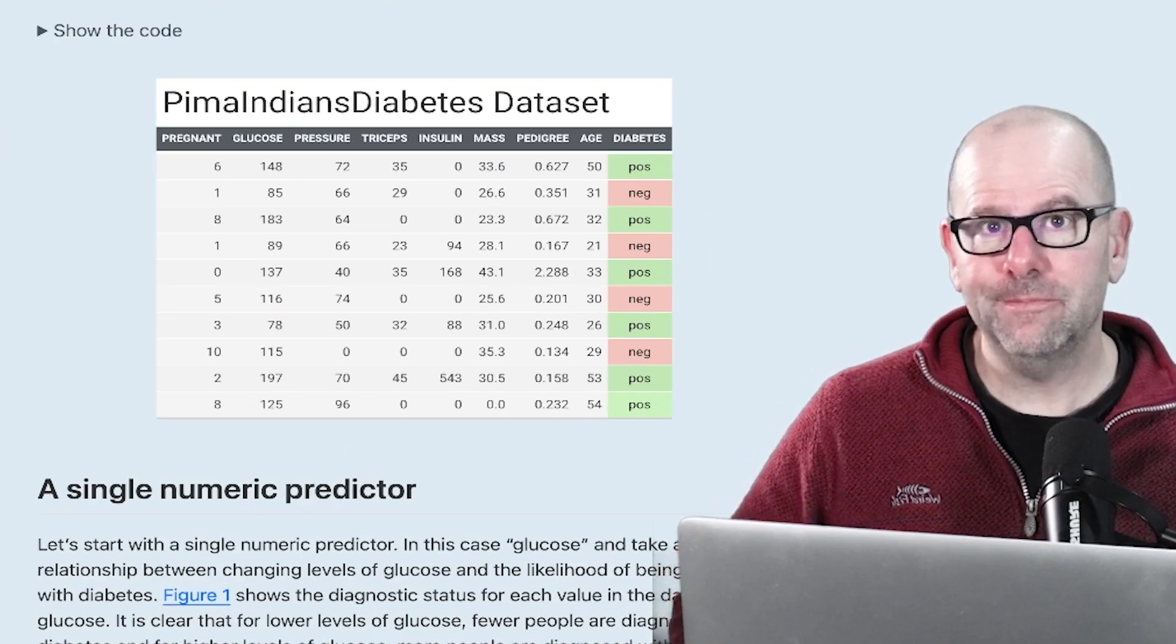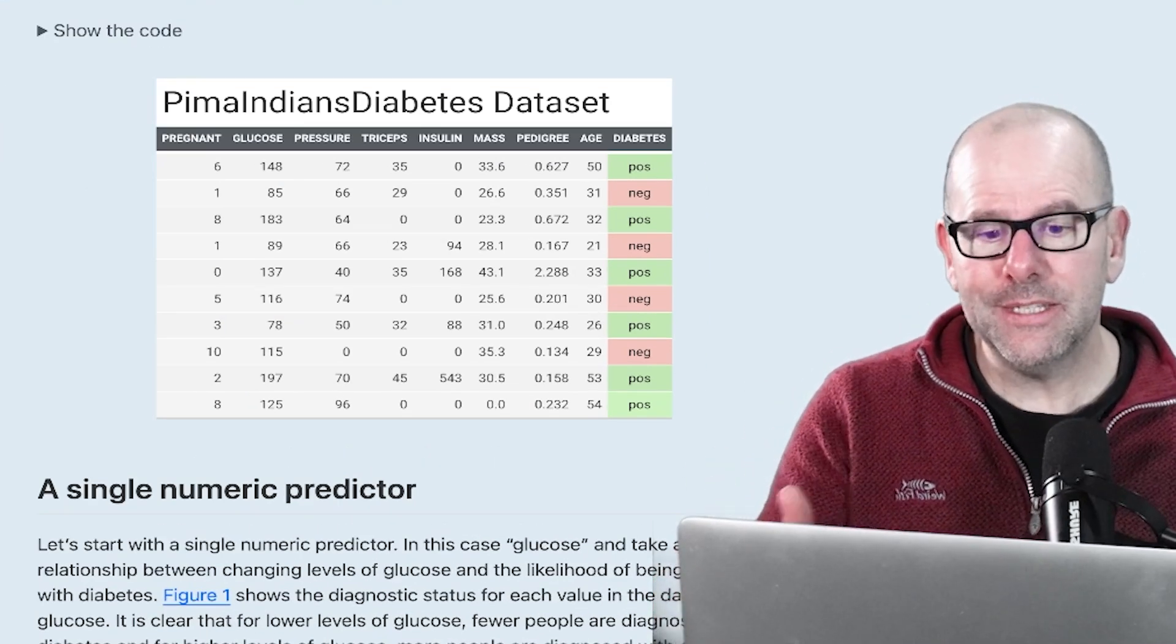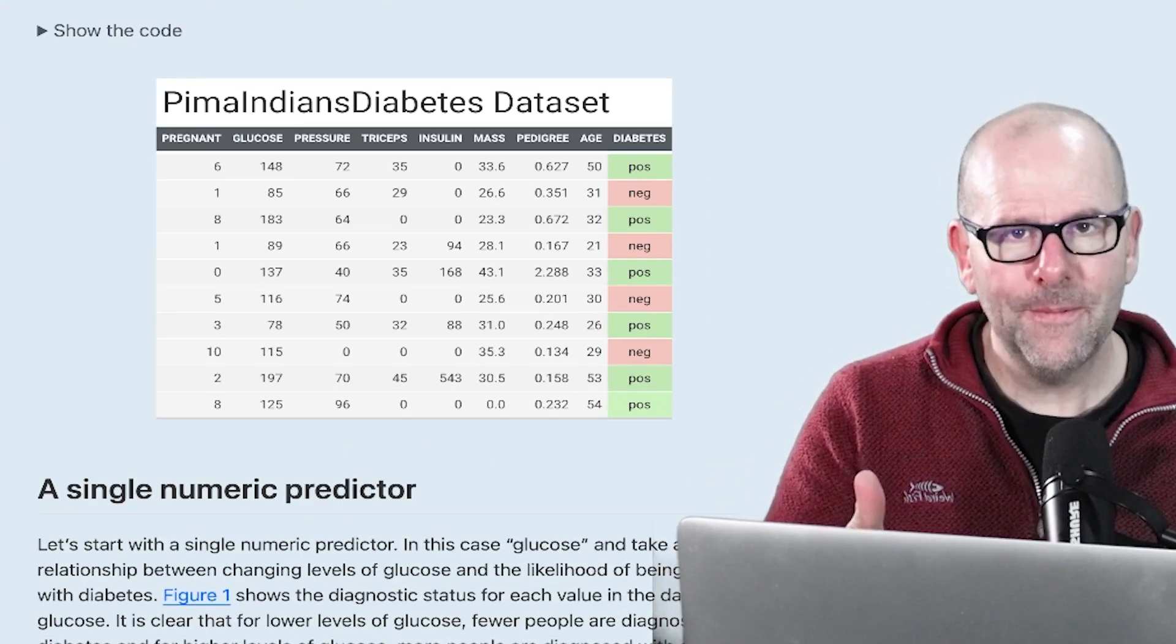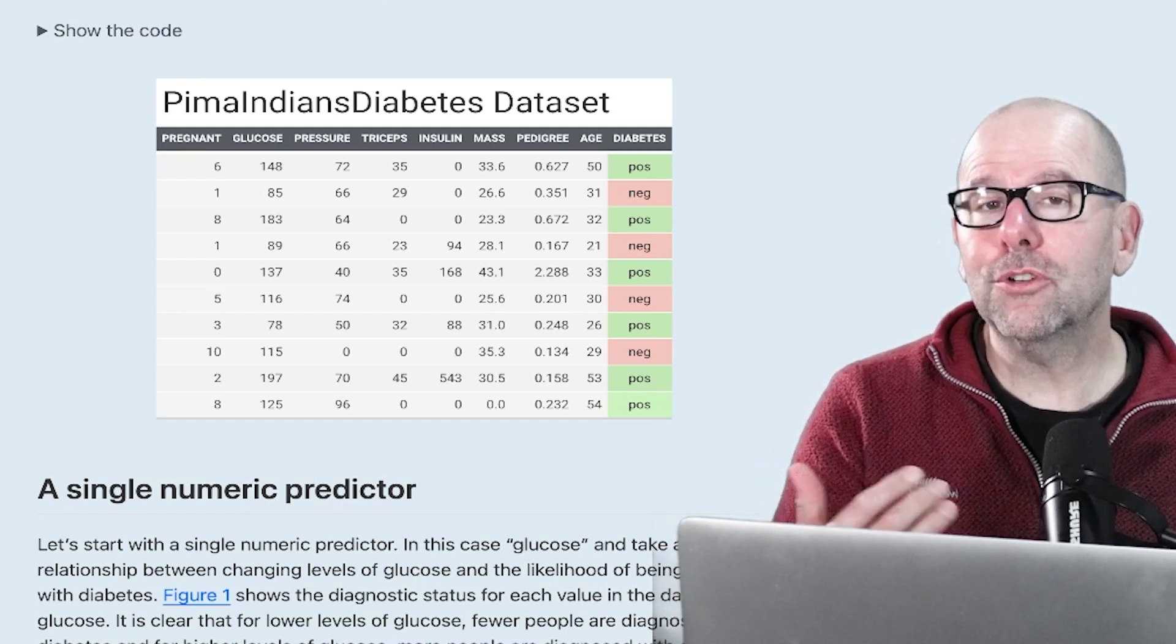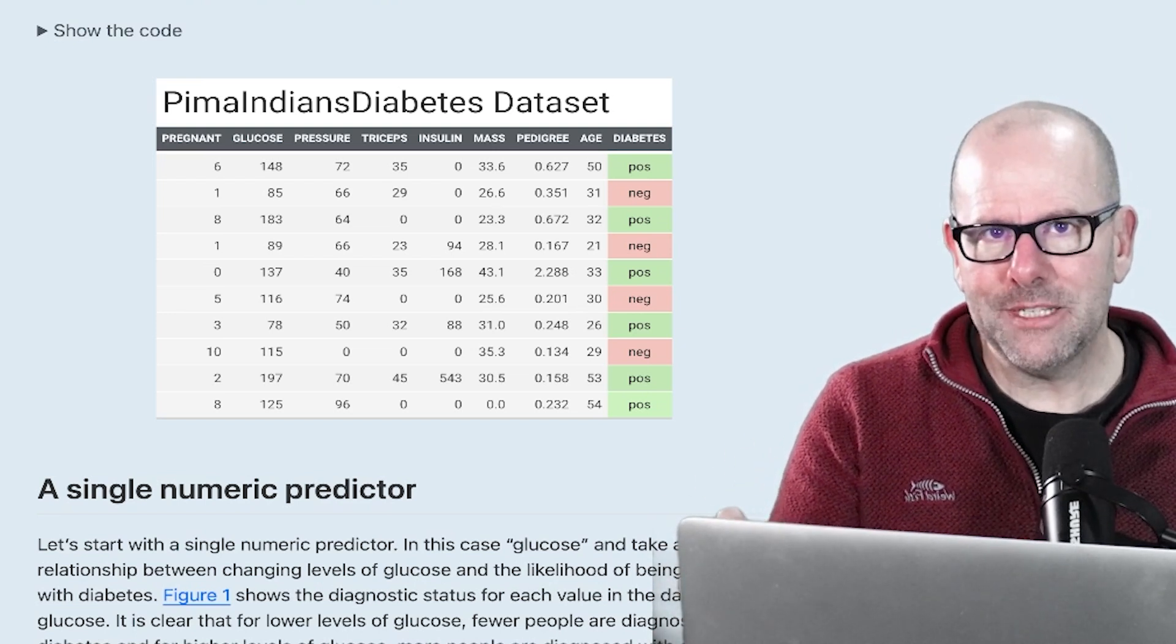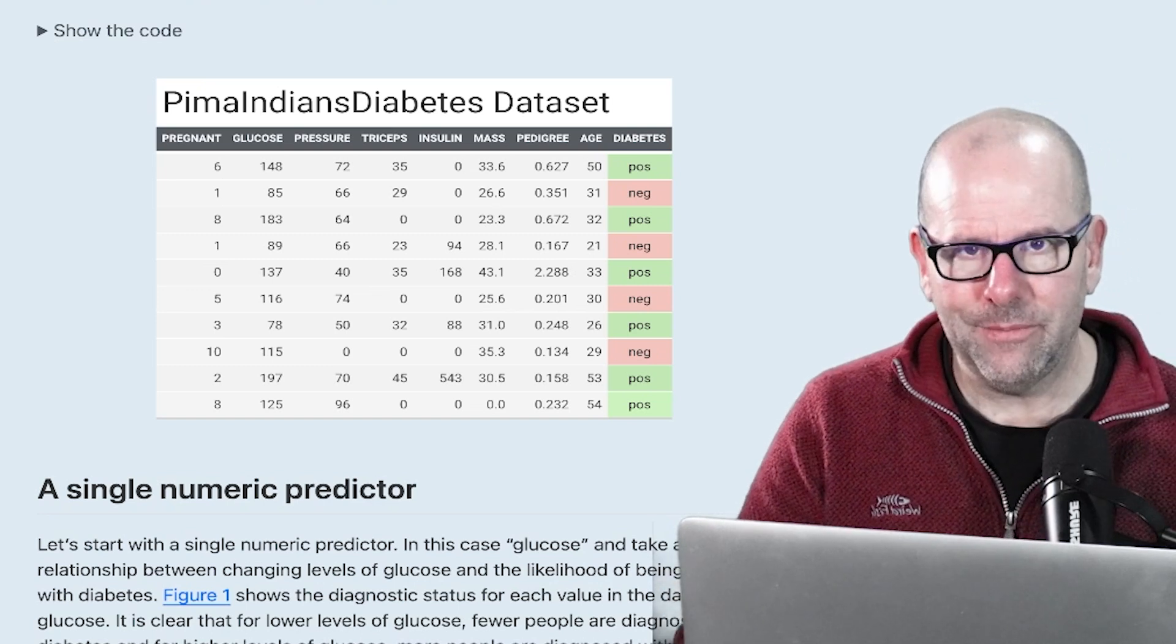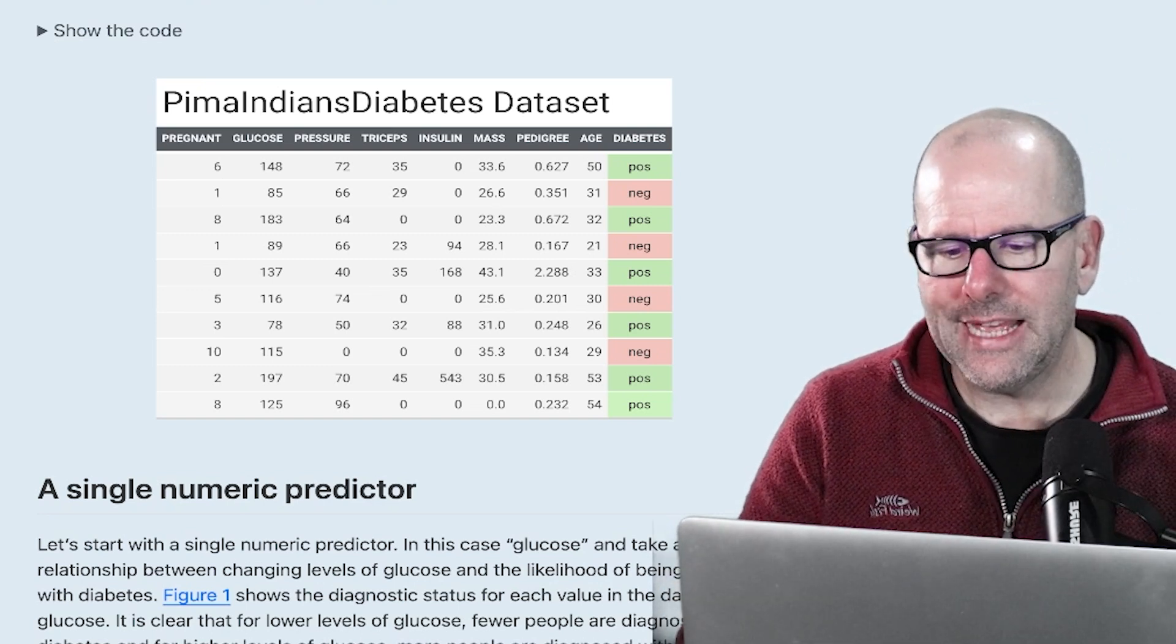First of all, logistic regression. You've got a binary outcome, in this case diabetes or not diabetes, and you've got multiple possible predictive variables and you want to know which of these and which combination of these may help us predict the outcome variable. And that's what logistic regression is.